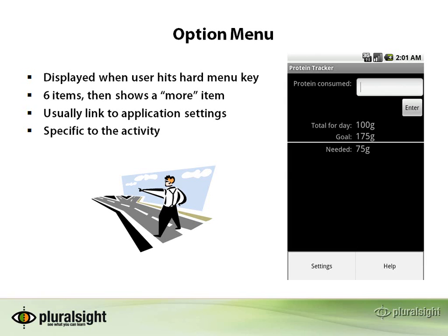If you have more than six items in an option menu, it's going to show a 'more' item — which I don't have pictured here — but if you had more than six, it would only show five and then show a button that says 'more' that you could click. Typically you're going to want to have your settings here. When a user hits menu on your screen, they're going to expect to be able to click settings and go to the settings. That's just the standard behavior that's pretty much expected.